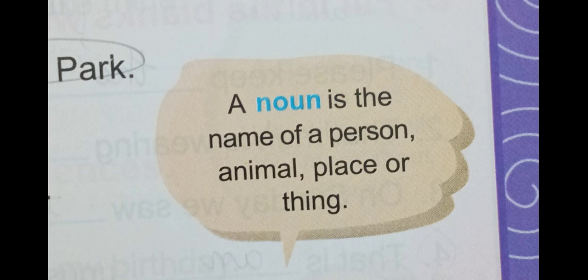Topic number two is Noun, which is very easy. A noun is the name of any person, place, animal, or thing. Everything around us is basically a noun — it could be a person, place, animal, or thing that we give a name to.